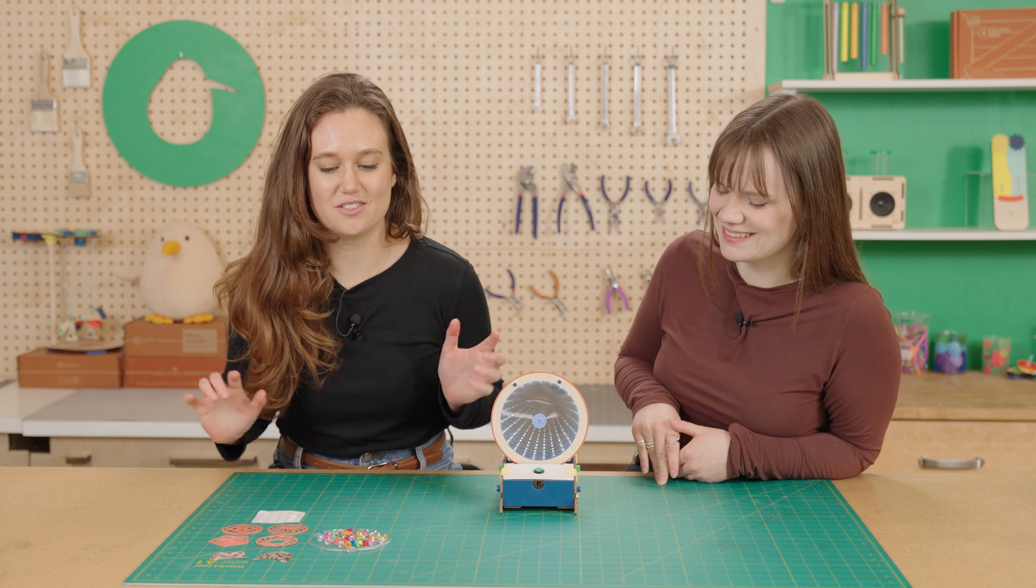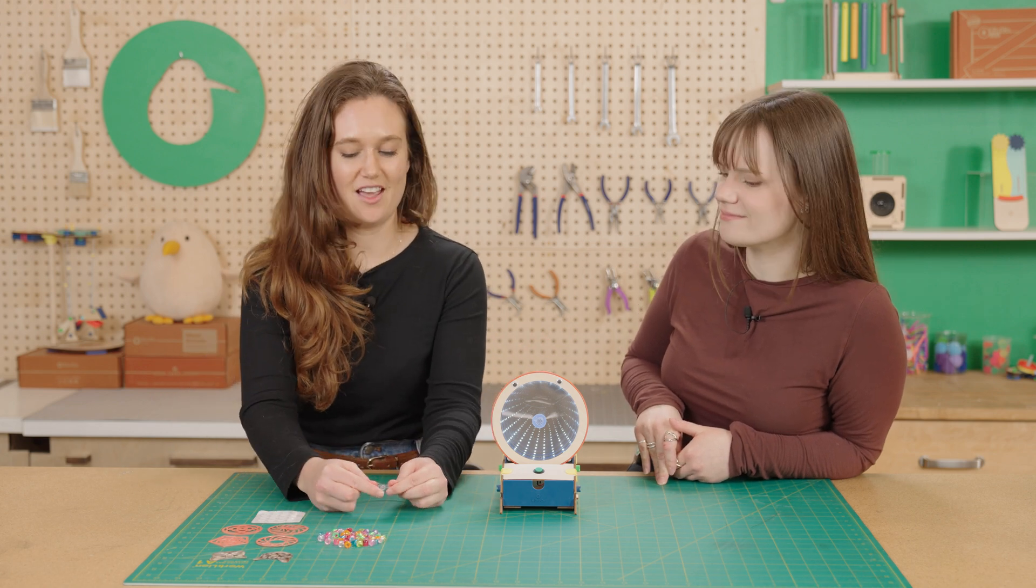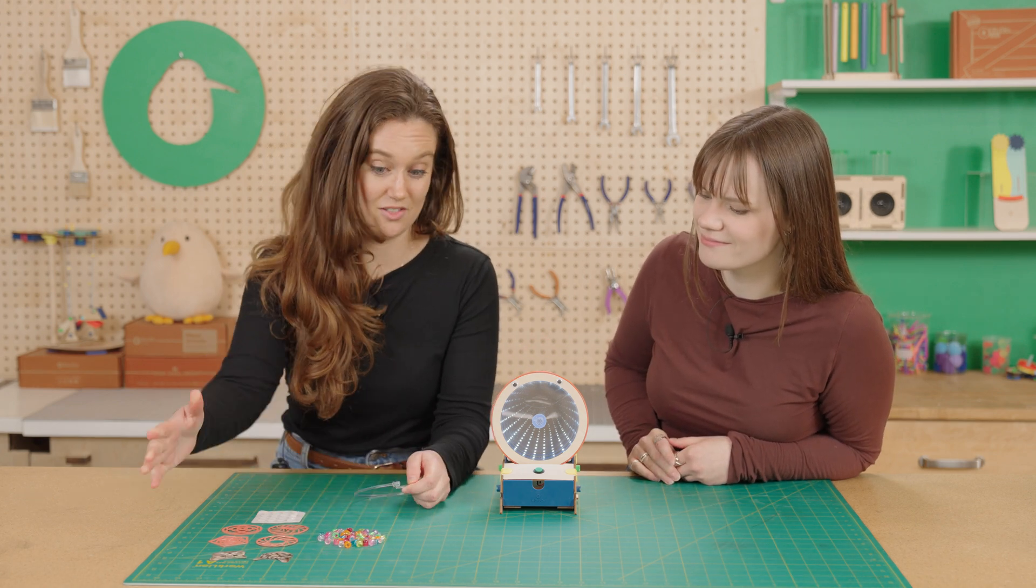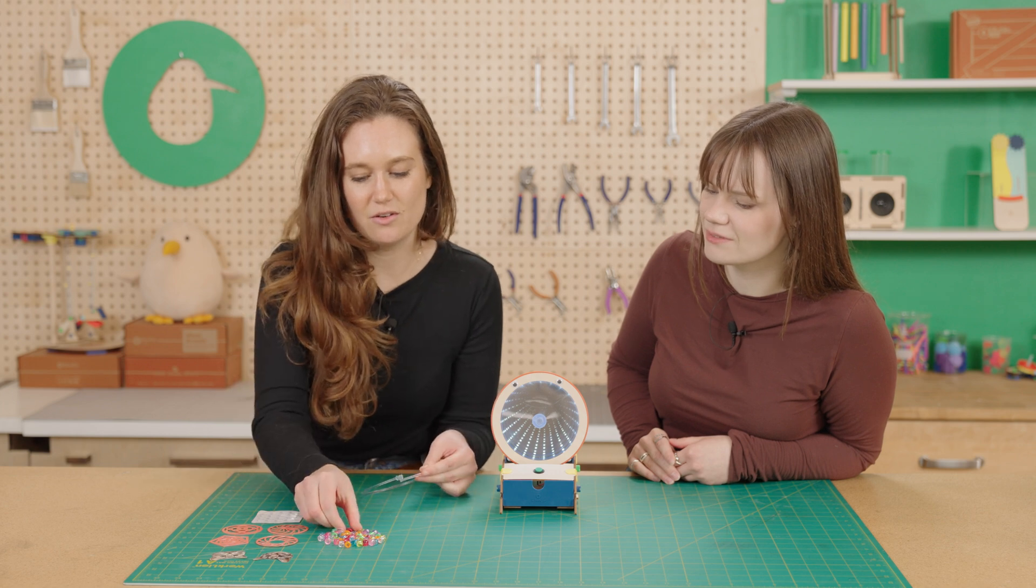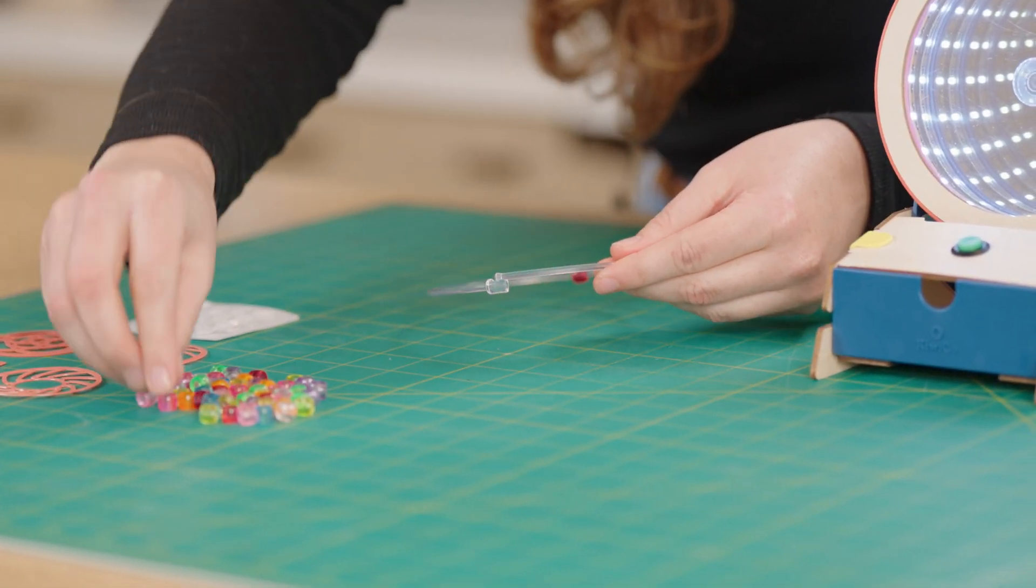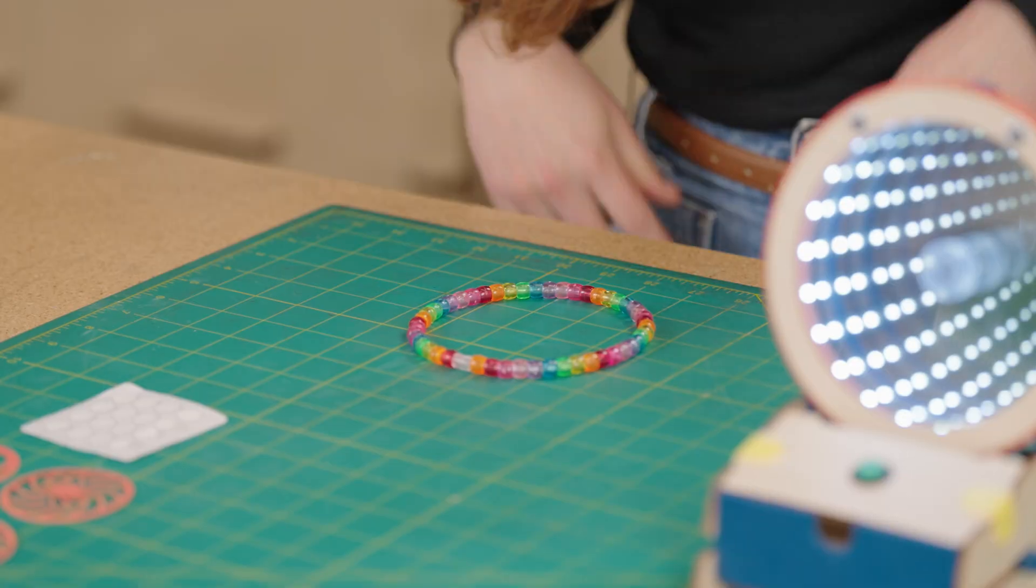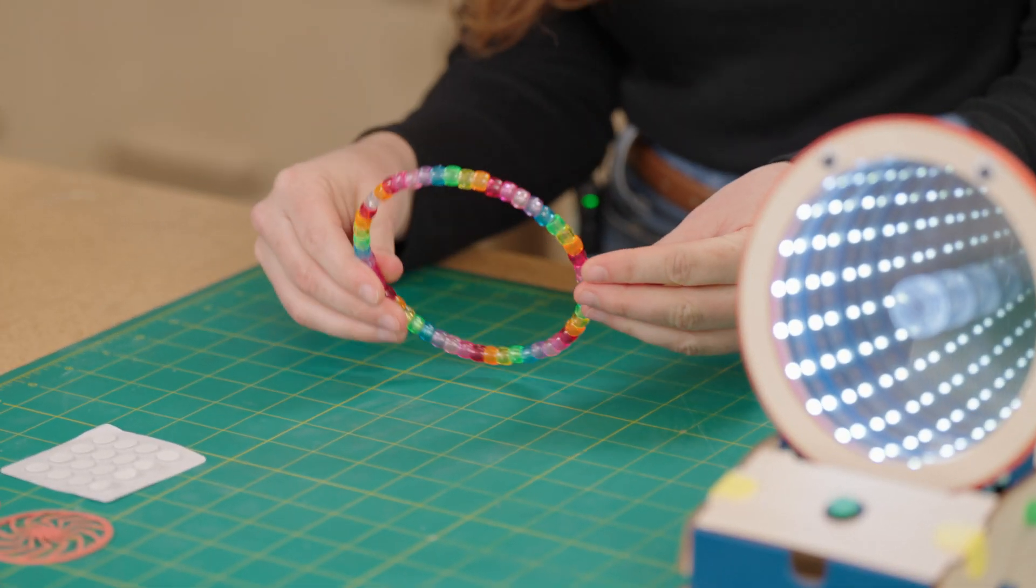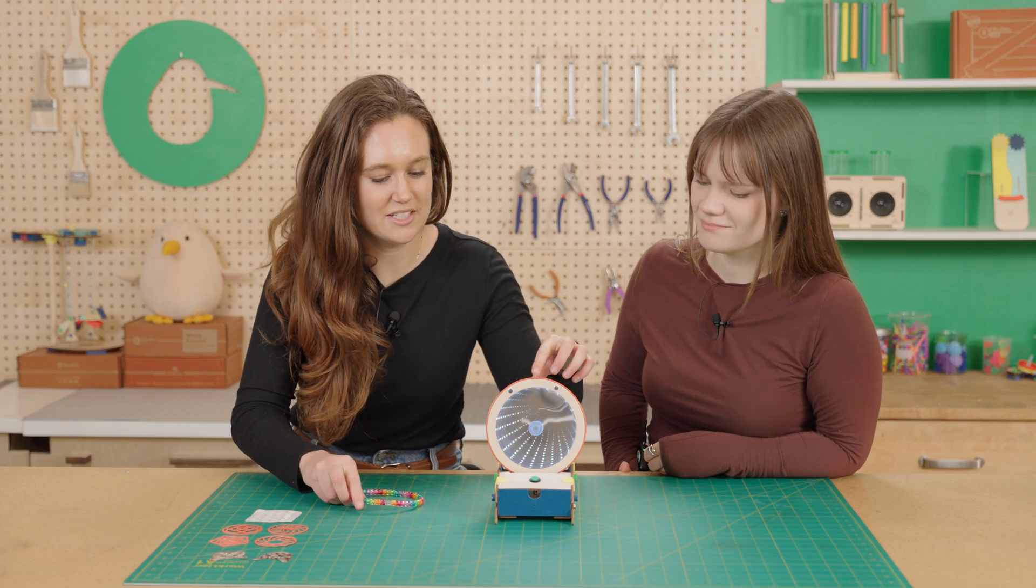Let's do it. So to start, you get this bead ring and a bunch of different colored beads to choose from. So you go ahead and start threading them on one by one. I'm going to try a rainbow. So now that we put all our beads on the ring, let me show you how we place it into the mirror.